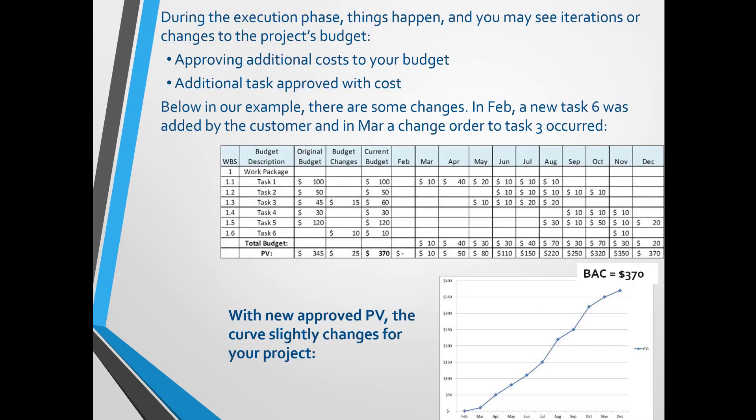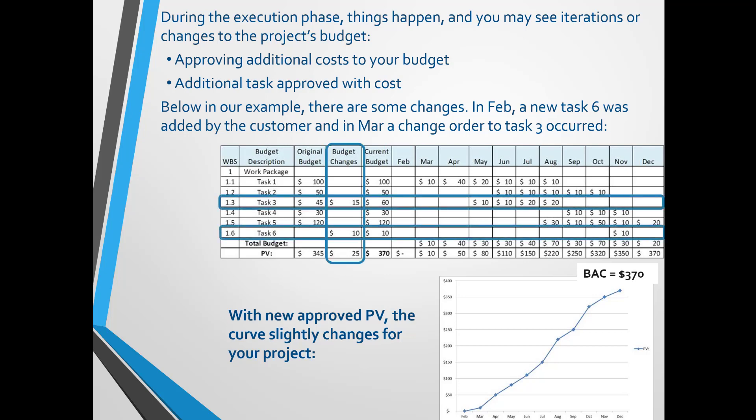During the execution phase, things happen and you may see iterations or changes to the project's budget. For instance, you may be approving additional costs or additional tasks added to your work package. In this example I have placed two changes: in February a new task 6 was added by the customer, and in March a change order to task 3 occurred adding more funds. The BAC goes from $345 to $370.